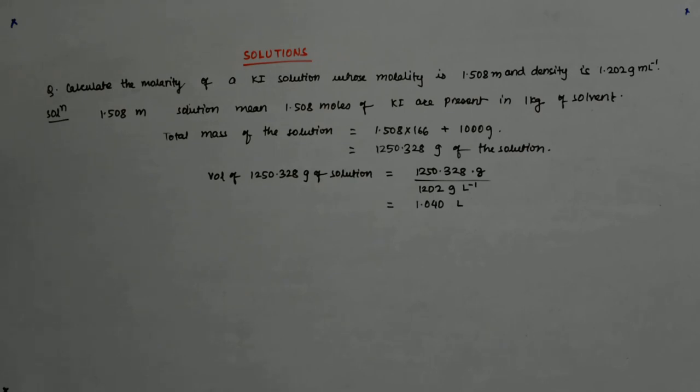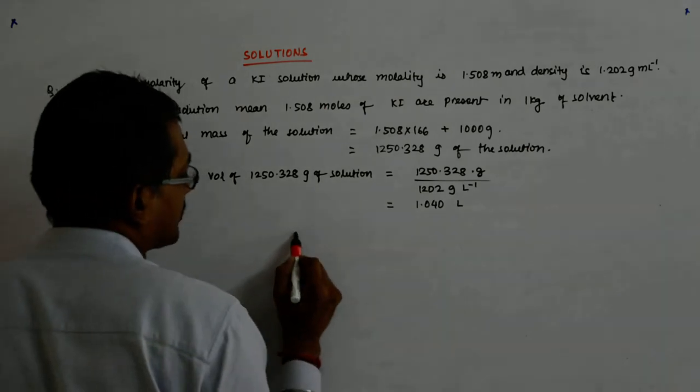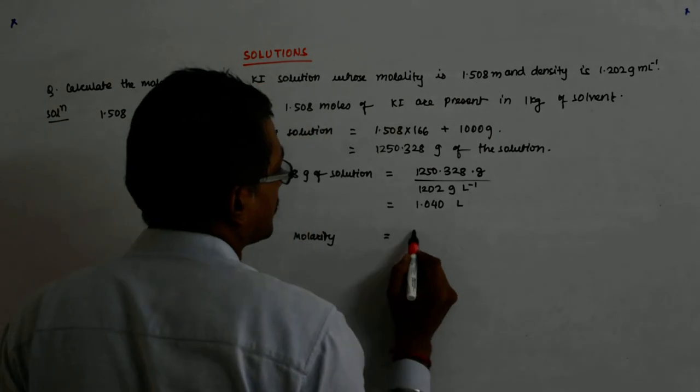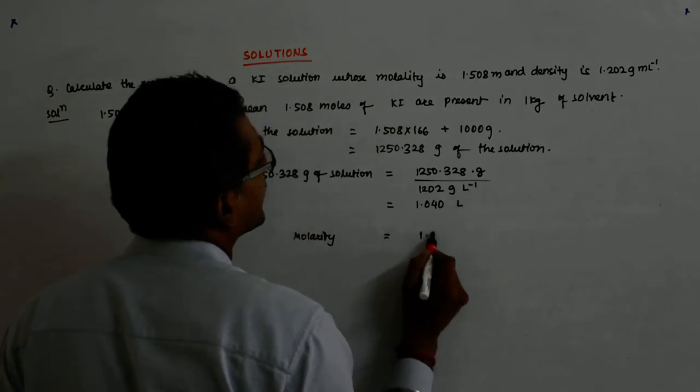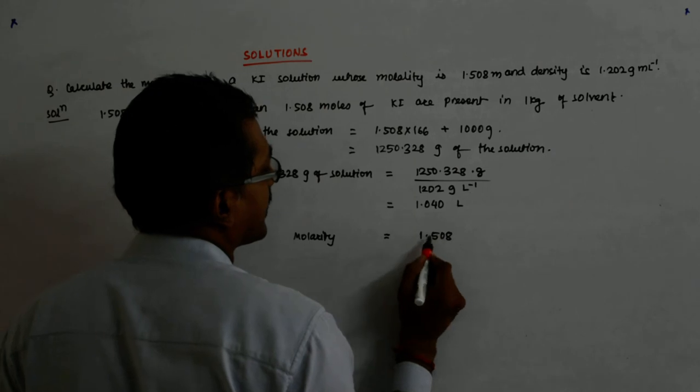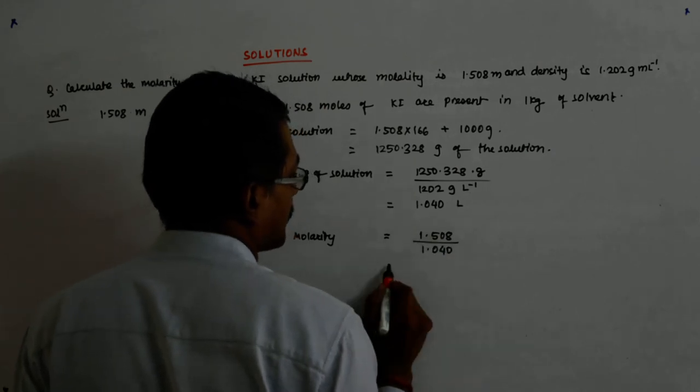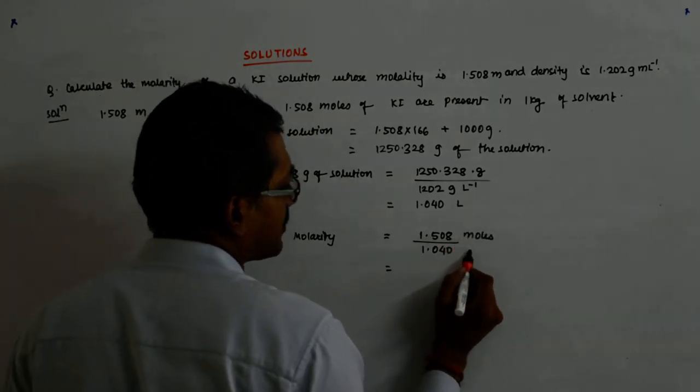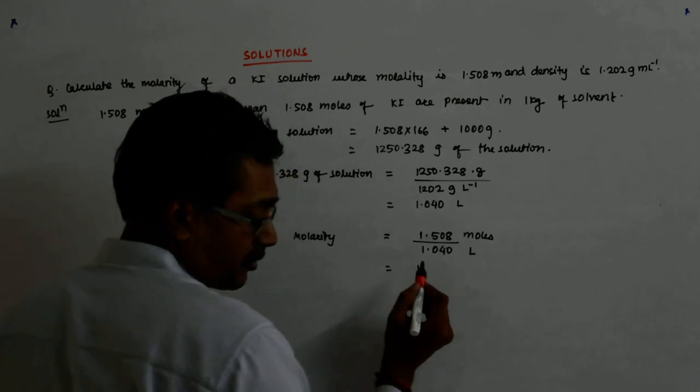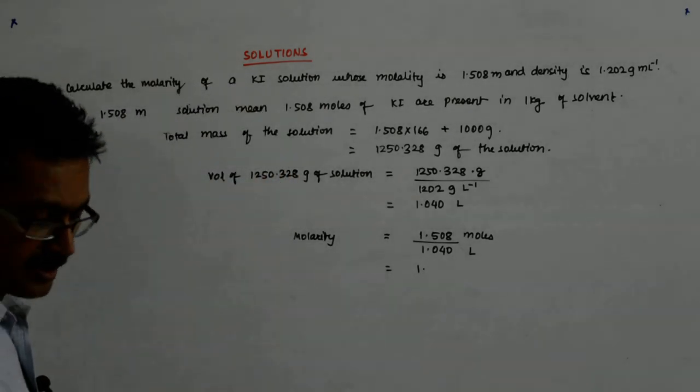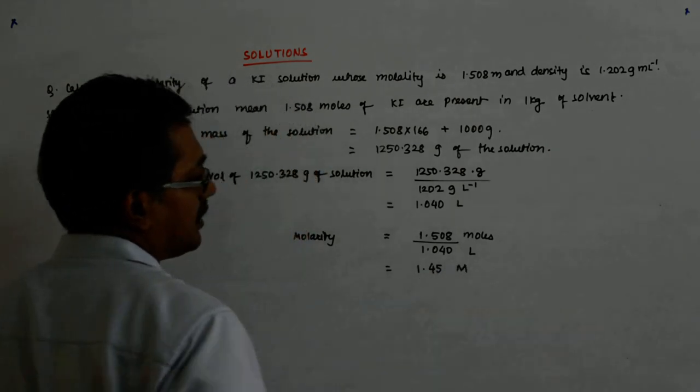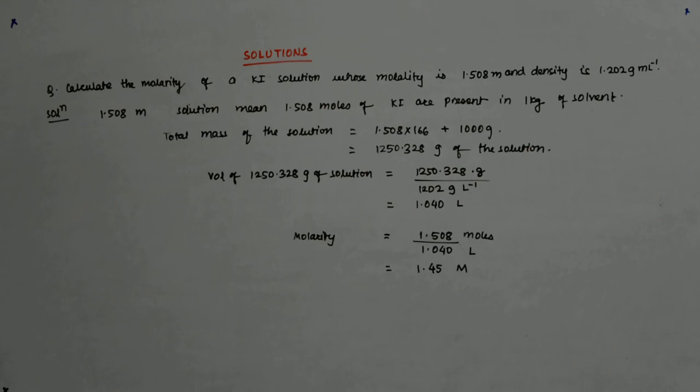Now, 1.040 liter contains 1.508 mole. So, what is the molarity? Molarity is equal to 1.508 divided by 1.040. This is so many moles and this is so many liters. So, what does that give you? It gives you 1.45 molar.